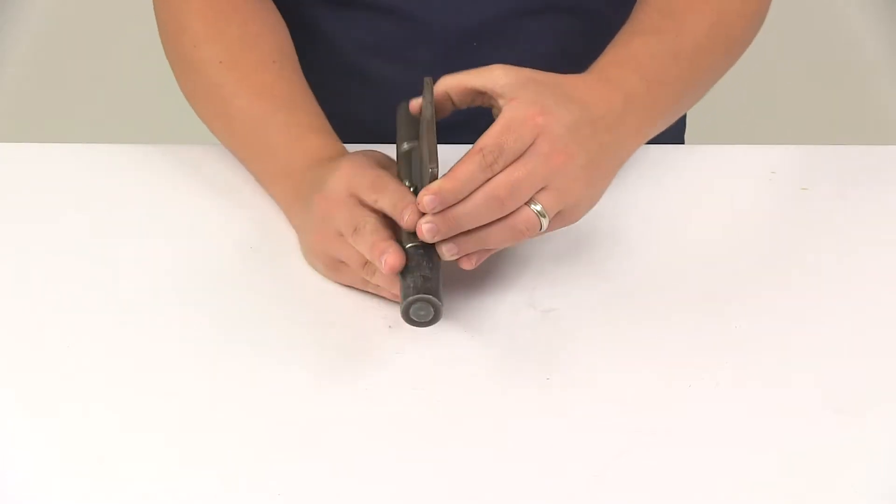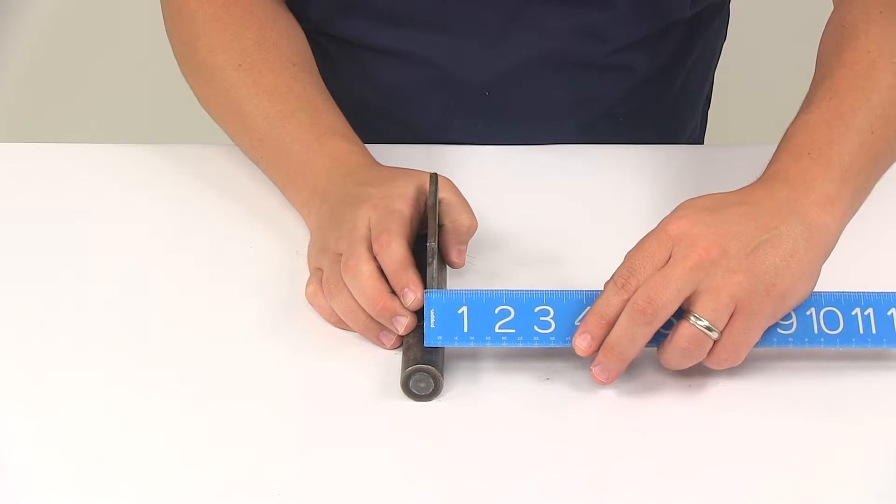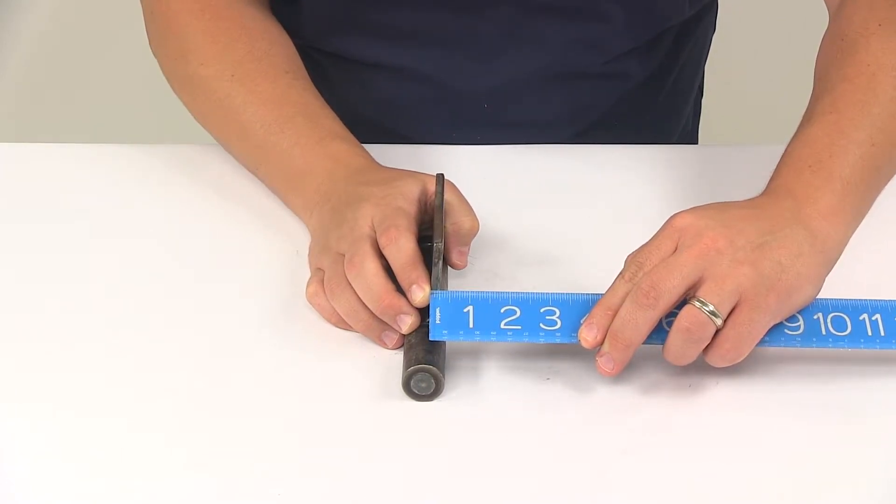A few measurements to go over with you real quick. The thickness of the plate right here is going to be quarter inch steel.